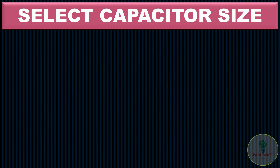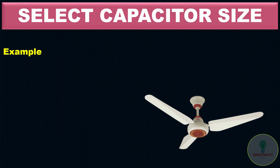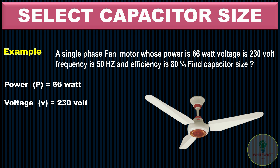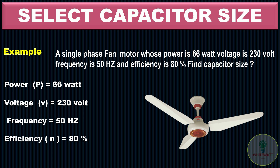For better understanding, let's see an example. We have a single phase motor whose power is 66 watts, voltage is 230 volts, frequency is 50 Hz, and the efficiency is 80%.